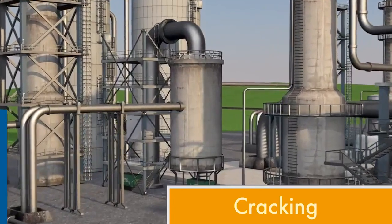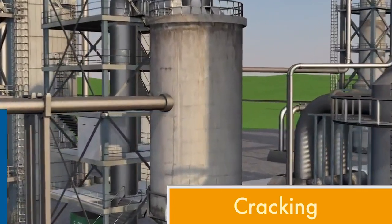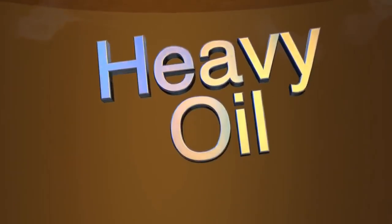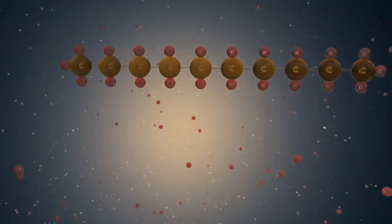A process called cracking is used to maximize the usefulness of heavy oil. Heavy oil has long strings of carbon and hydrogen molecules.